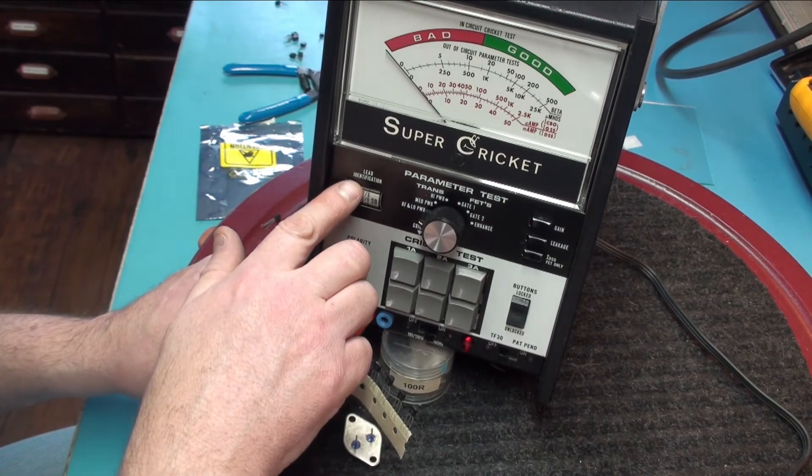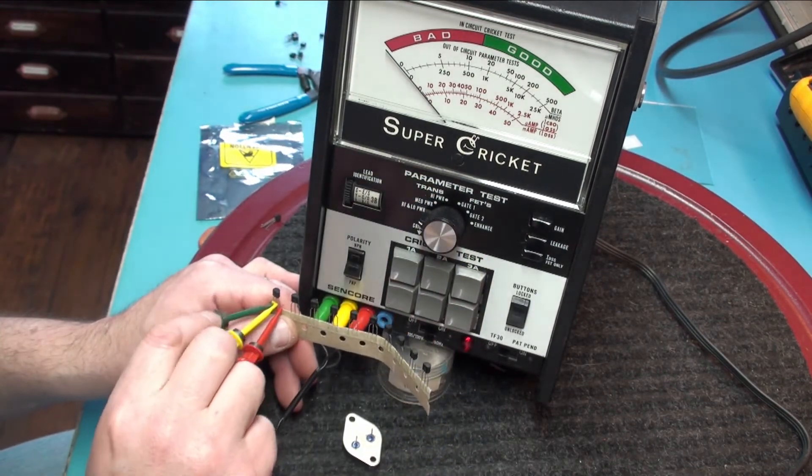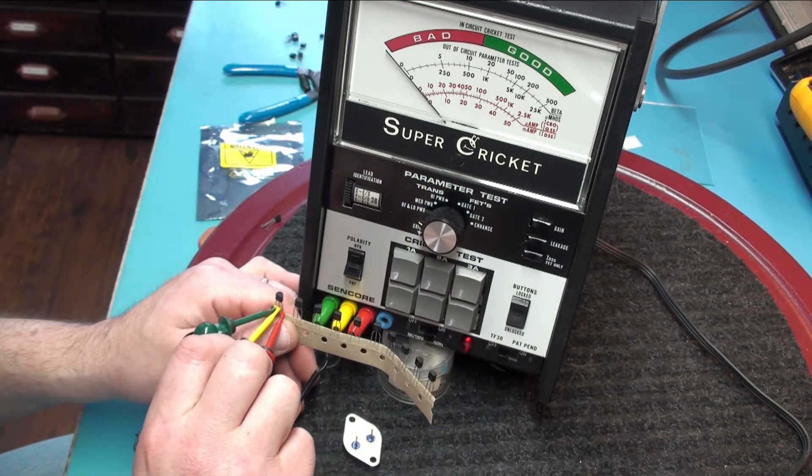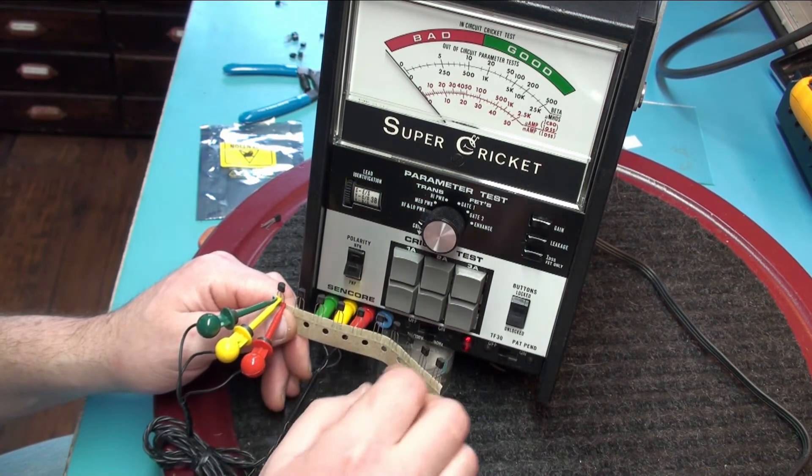So I am going to bring up 3B. So that is telling me green is the emitter, yellow is the collector, red is the base. So it is good to know that.